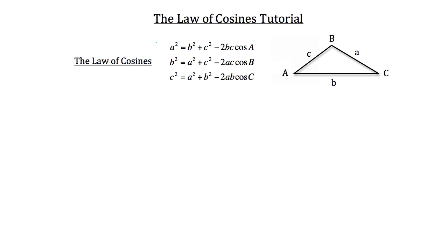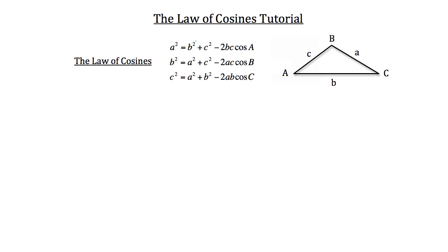My recommendation to you is that you choose one of these and memorize it, and then in the future you'll be able to manipulate it to look like either of the other two. That'll be helpful when you're solving for different pieces of information. For example, I would take this top Law of Cosines: a squared is equal to b squared plus c squared minus 2bc cosine of A.